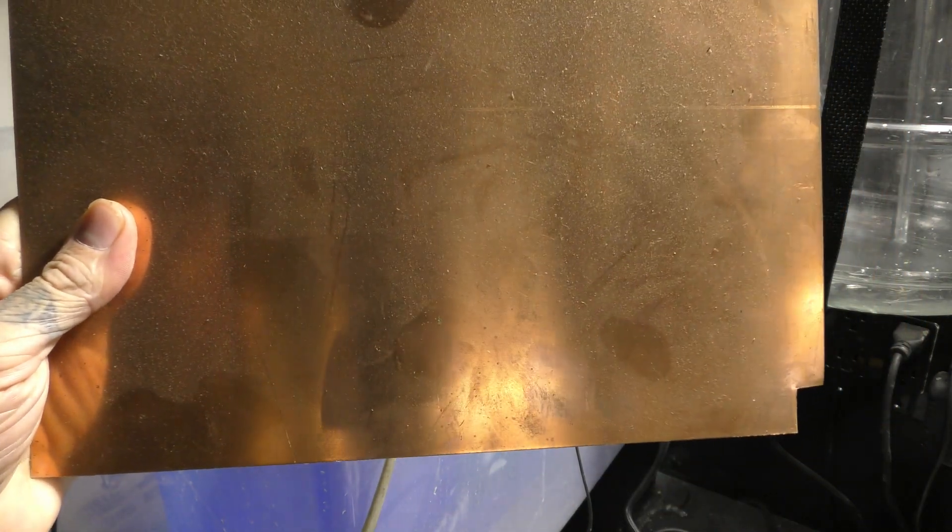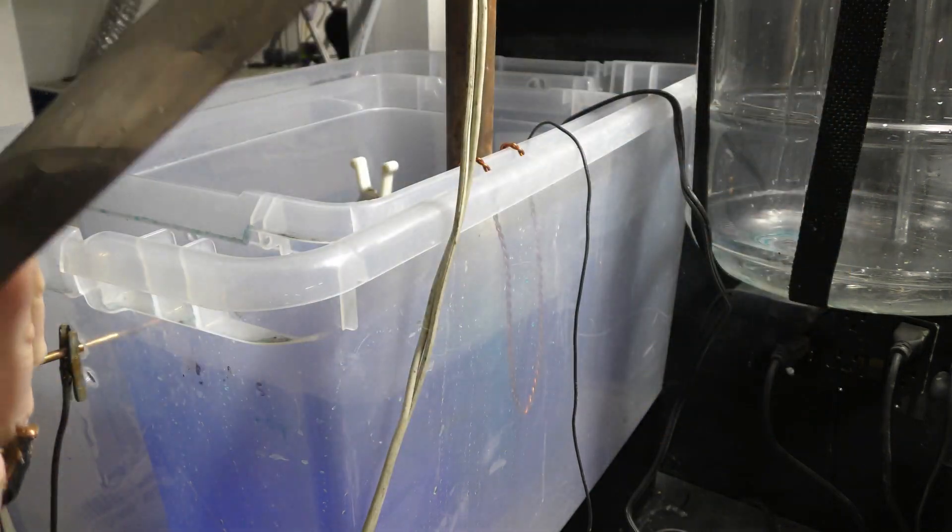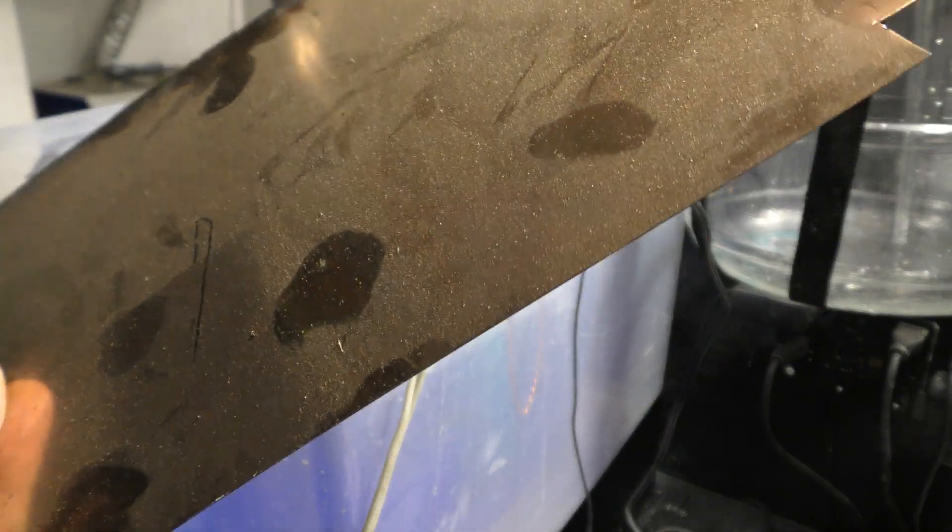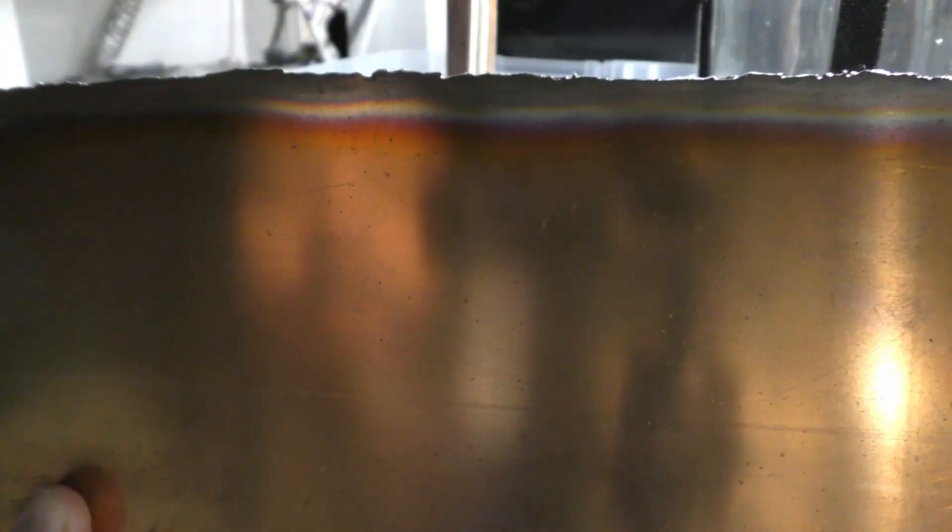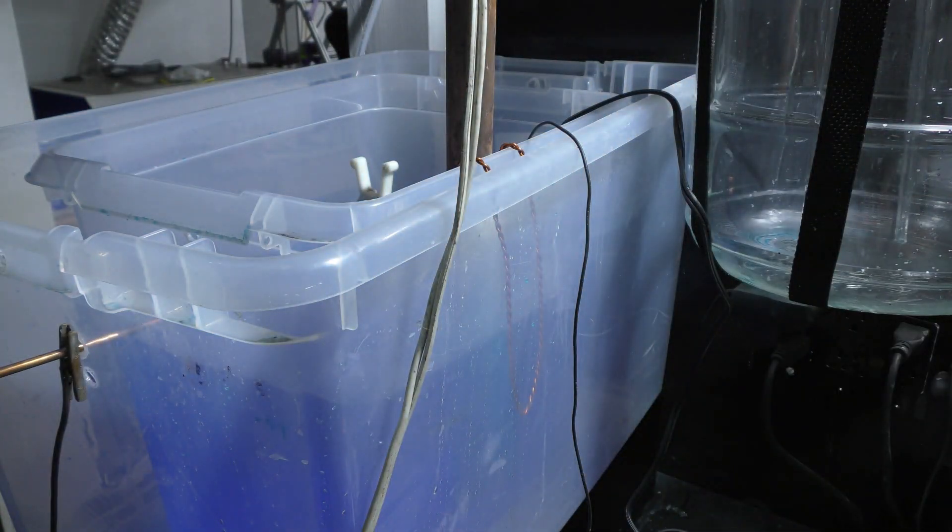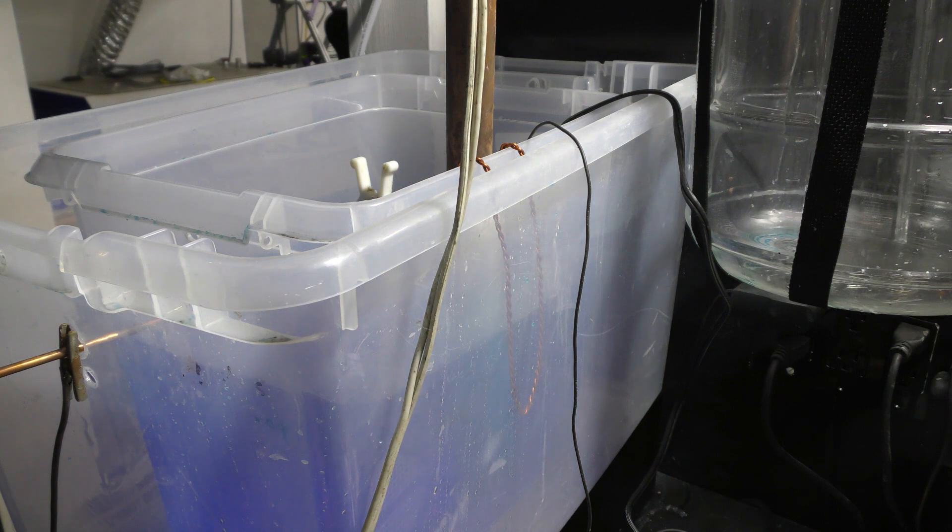One, you're going to want to get a piece of copper like this. It's about 0.05, maybe 32nd of an inch copper. Pure copper, 100% pure copper. Don't, let's say, go to your hardware store. You're going to find copper that looks like that, but really it's aluminum with a copper painting over the top of it. So don't be fooled.